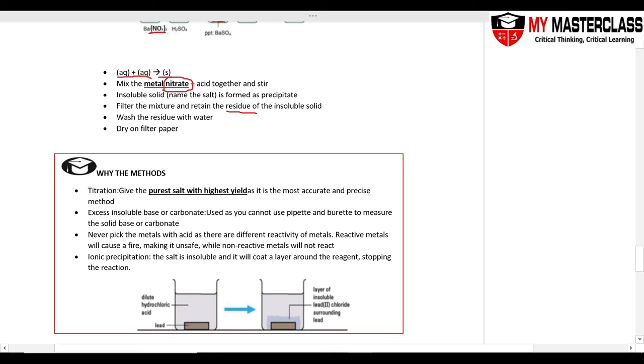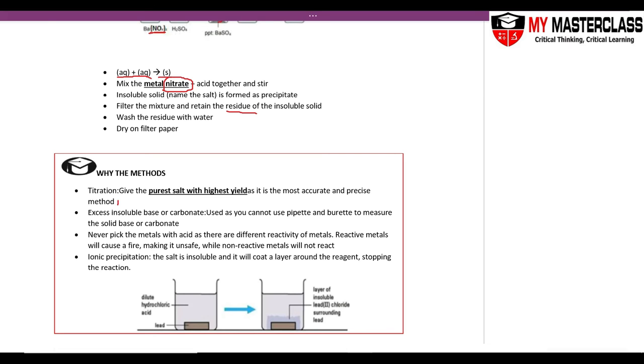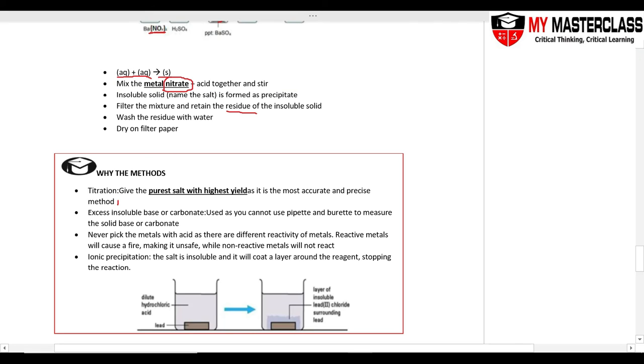Why are these methods chosen? Titration gives the purest salt with the highest yield as it is the most accurate. Also, you must use titration if I choose two aqueous solutions as your starting material. Titration is the only method with endpoint. It's the only method you can do to know that you added the right amount of acid and alkali so that neutralization will occur.